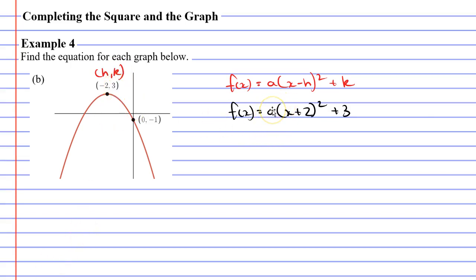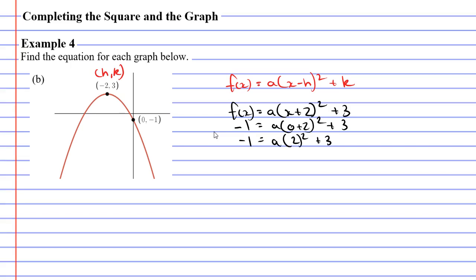We still need to figure out what A is, so we're going to look at the second point. When x is 0, our function will equal negative 1. So we're going to replace x with 0, and we know that when x is 0, our function equals negative 1. Looking at the brackets: 0 plus 2 is 2, so this becomes negative 1 equals A times 2 squared plus 3. Two squared is 4, so we get 4A plus 3.